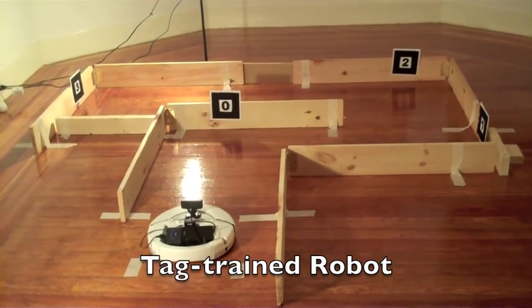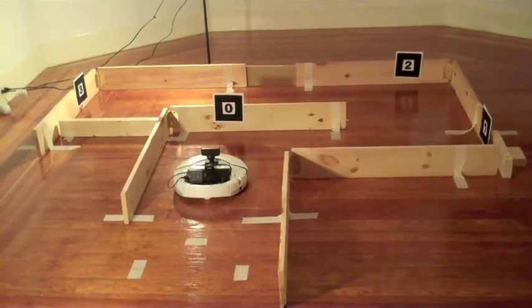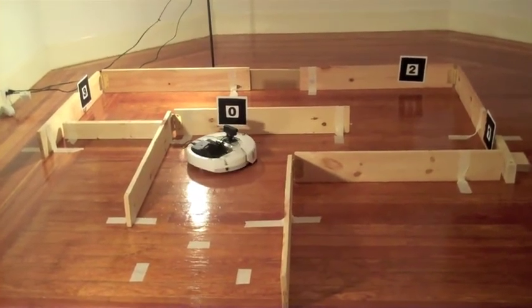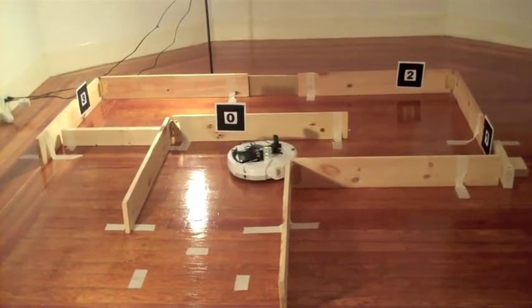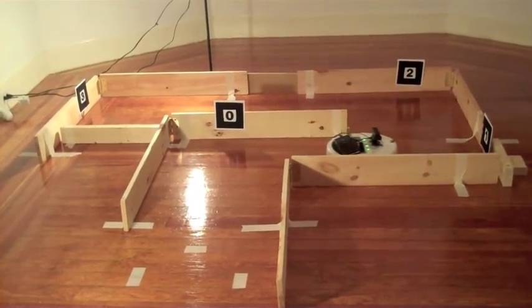After training with scores of users, the robot used one of the two datasets to learn a maze navigation policy. Here, the robot makes its own way through the maze using training provided by people who could see only the blue squares.